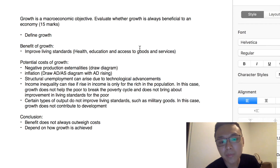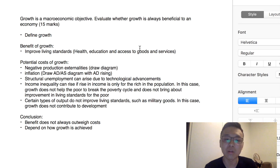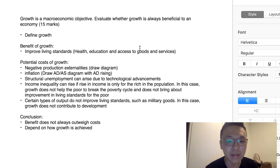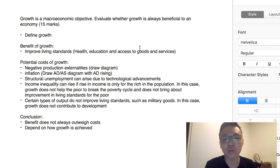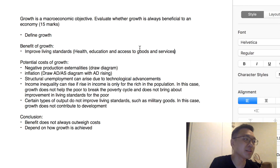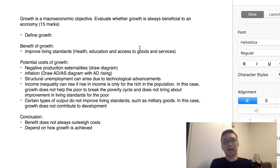The fourth point is that if economic growth leads to an increase in income, but that income only goes to the rich, there can be more income inequality. In that case, growth will not help the poor break out of the poverty cycle, will not improve their living standards, and can potentially lead to political unrest. Fifth, an increase in output may not necessarily improve living standards — for example, in North Korea, a large part of GDP is military goods, but these do not improve the living standards of North Koreans.